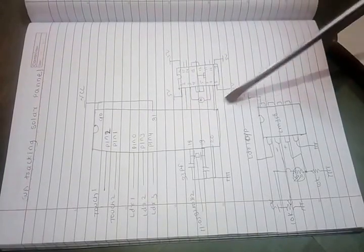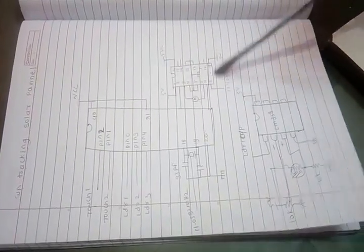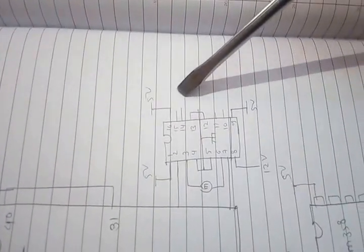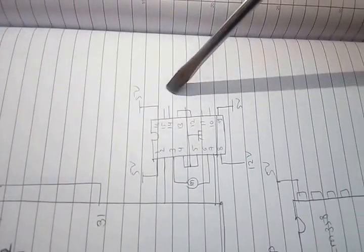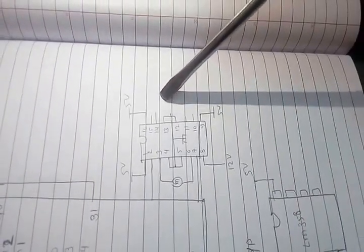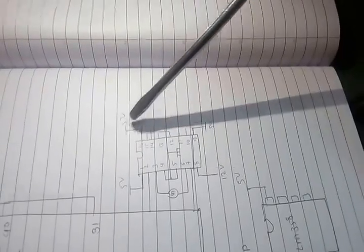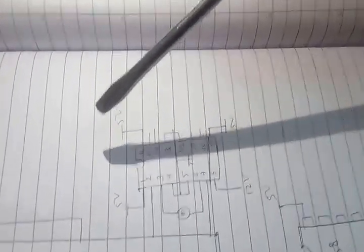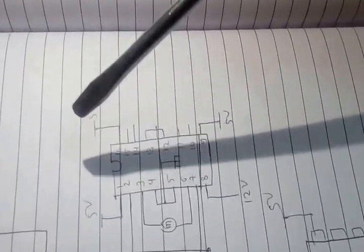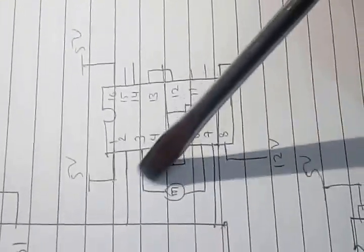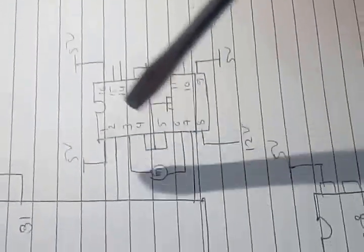The output of the microcontroller is given to the input of the L293D. This is the motor driver IC, used to drive the motor. If we use the condition 1 and 0, the motor rotates clockwise and anticlockwise accordingly.